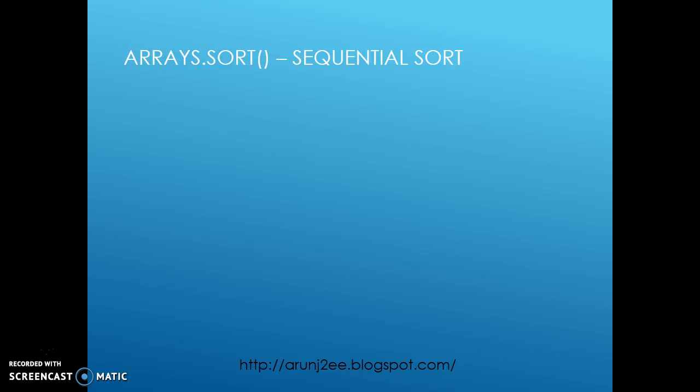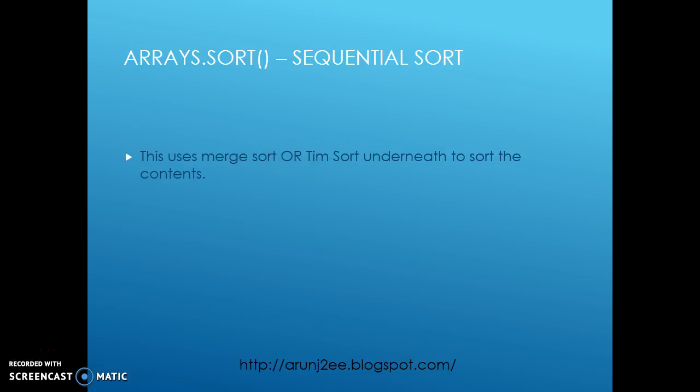So why do we call it serial sort? Basically, this serial sort uses either the merge sort or the Tim sort in the backend. Merge sort is a divide and conquer algorithm. It divides your array into multiple small parts, then sorts each individual part one by one, and then keeps on merging the sorted arrays to get the final array. But all this task of dividing and merging arrays is done in a sequential manner.